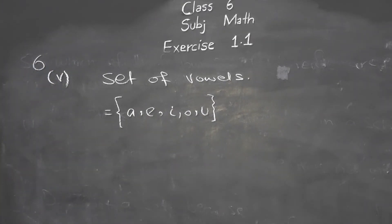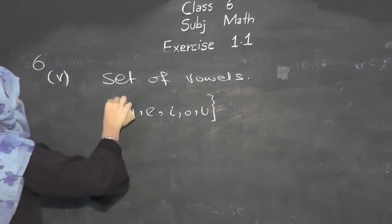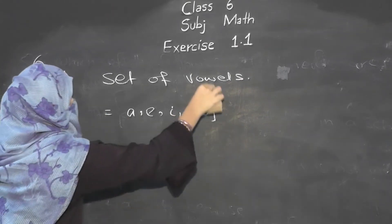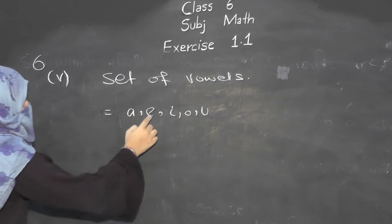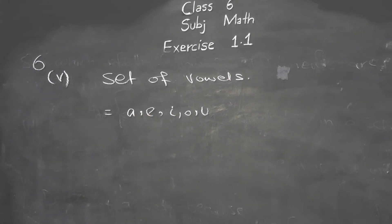As you know from English, vowels are a, e, i, o, u. But you don't just write a, e, i, o, u — you write them in set form, which means you put them inside curly brackets. So the set of vowels = {a, e, i, o, u}.